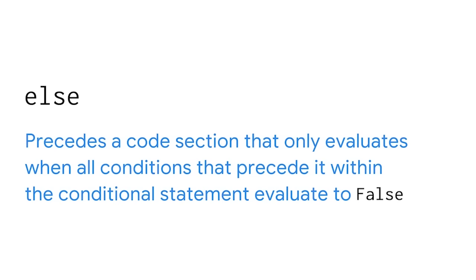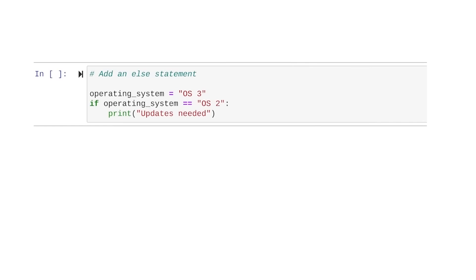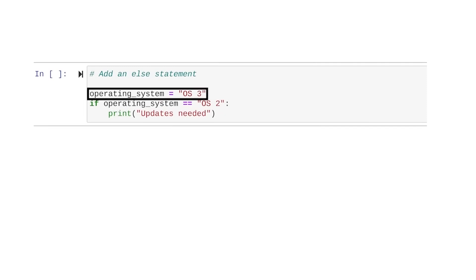Sometimes we want our conditional statements to execute another set of instructions in the event our first condition isn't true. In our example, not being true means the device is running an operating system other than OS2. This is when we need to incorporate the else keyword. Else precedes a code section that only evaluates when all conditions that preceded within the conditional statement evaluate to false. Else statements always follow an IF statement and end in a colon. Let's add an else statement — this time we set the operating system variable to OS3.